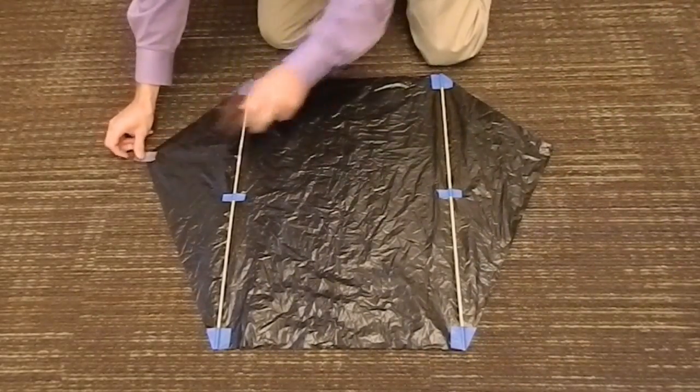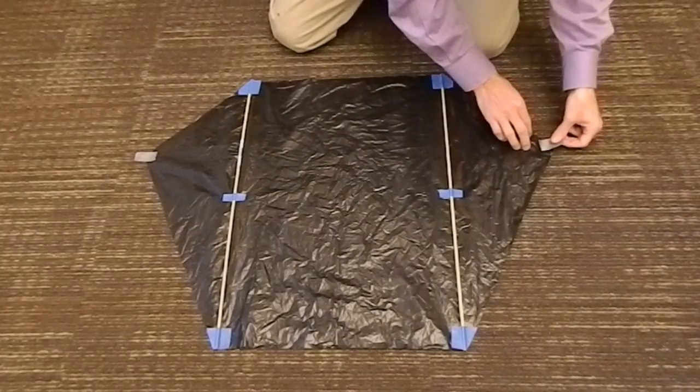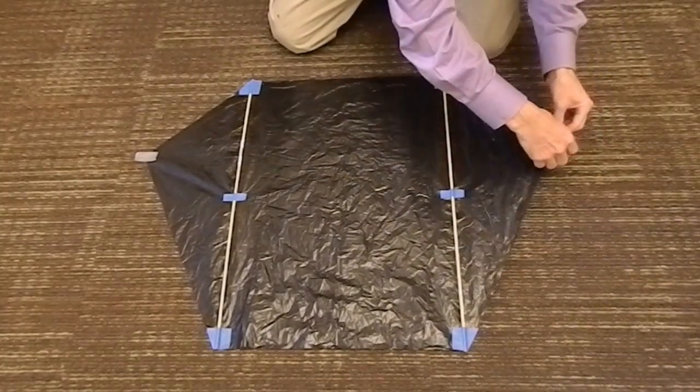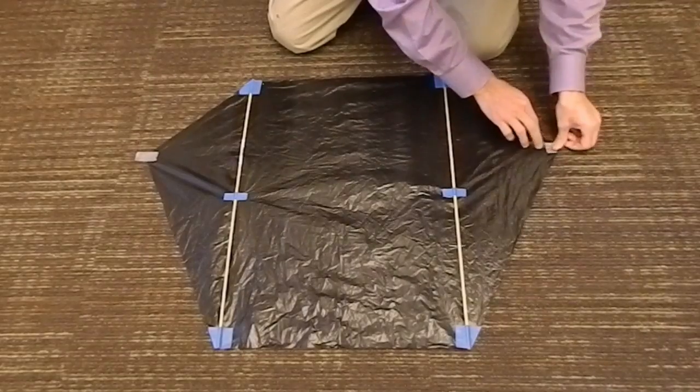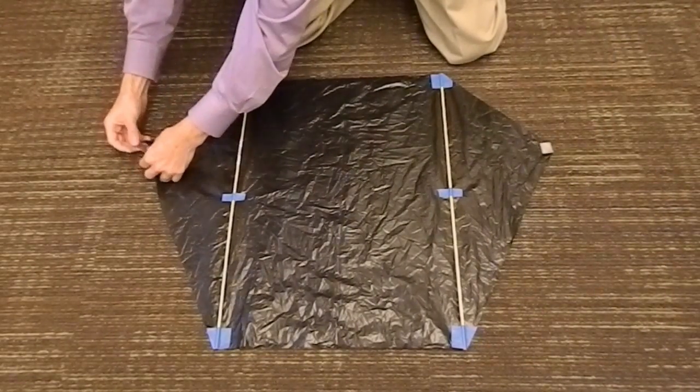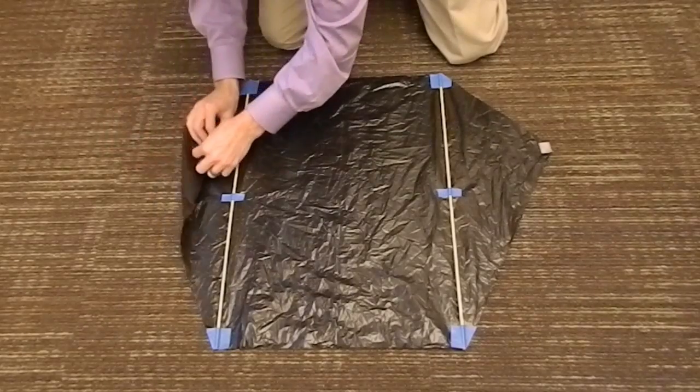I'm going to use little pieces of duct tape to reinforce the corners where the bridle is going to attach, because without these the string would just pull right through the trash bag. Then I'll fold them over and attach the strings next.